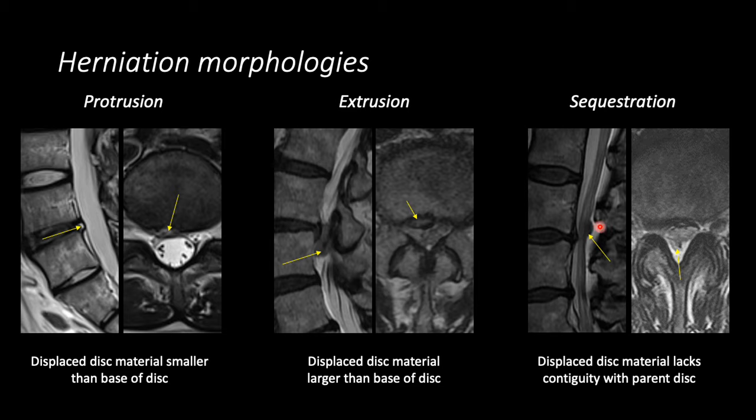In summary, we talked about the normal MRI sequences used in lumbar spine imaging, some normal anatomy, a search pattern to utilize when looking at lumbar spine MRIs, and we developed a vocabulary to describe disc pathology.